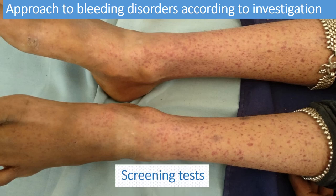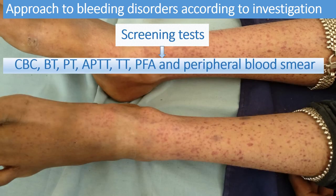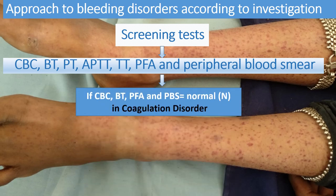In the screening test we send CBC, PT, APTT, TT, PFA, and peripheral blood smear. If you find that CBC and platelet counts are normal, bleeding time, platelet function analyzer, and PBS are totally normal, and only PT, APTT, or TT is abnormal, then you have to suspect a coagulation disorder and investigate further.